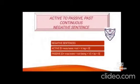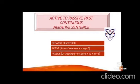Active to passive — past continuous tense with negative sentences. In active voice: Subject + was/were + not + verb(-ing) + object. For example: 'She was not writing a letter.' In passive voice: bring the object ahead, use 'was'/'were', put 'not' after the helping verb, then 'being', then the verb in its third form, then 'by', then the subject at the end.